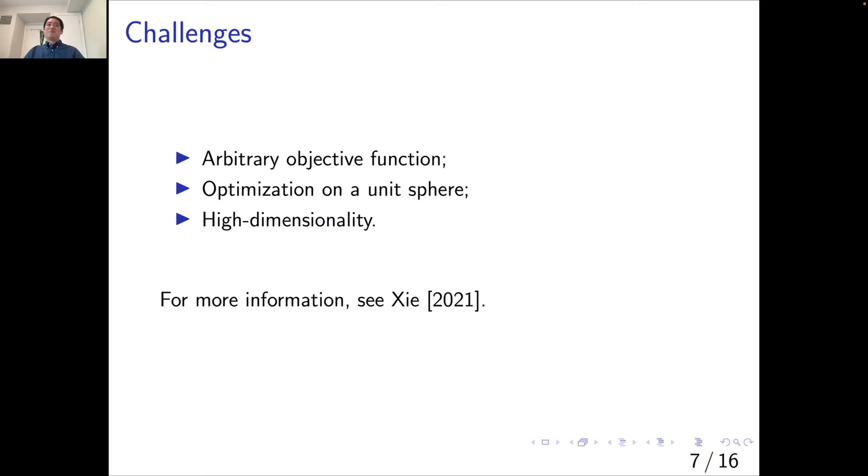Unlike PCA, the principal components coincide with the eigenvectors of the covariance matrix, which is easy to solve. For projection pursuit, we are facing arbitrary objective functions, which means the analytic solution does not necessarily exist. Also, as far as I know, there is not a single optimization method that is designed for a unit sphere. And don't forget the curse of dimensionality. We're working with high dimensional space. It's so easy to miss a part of this space.